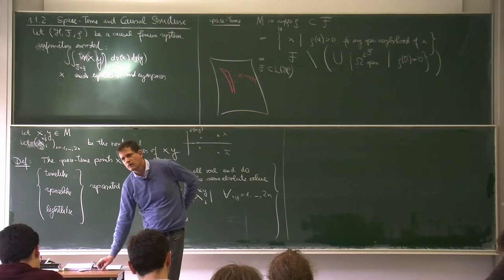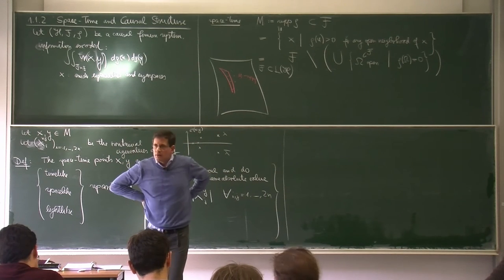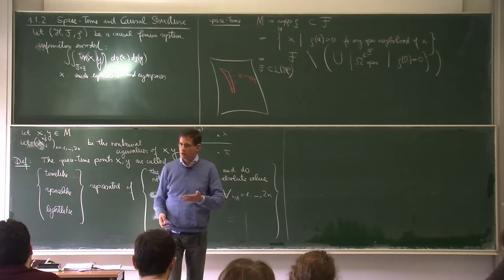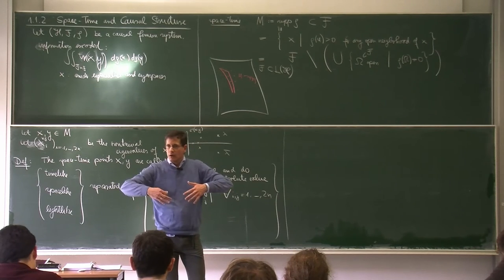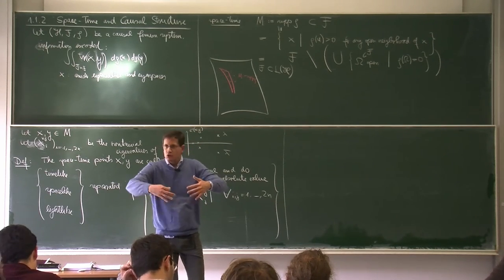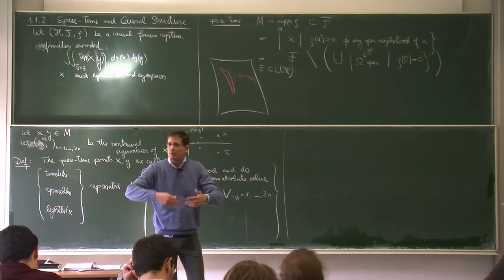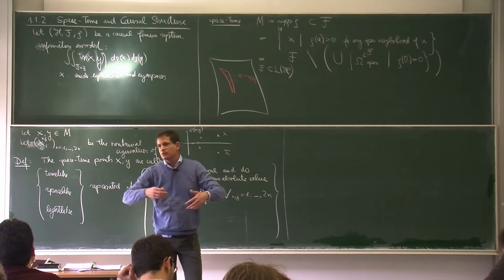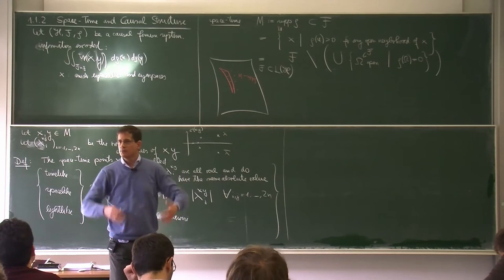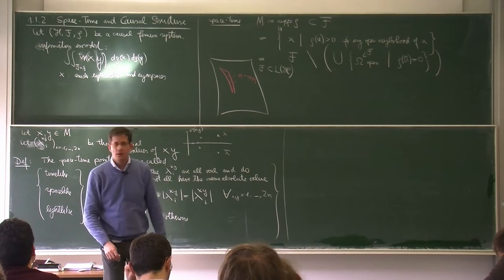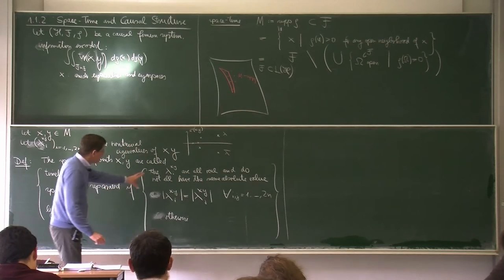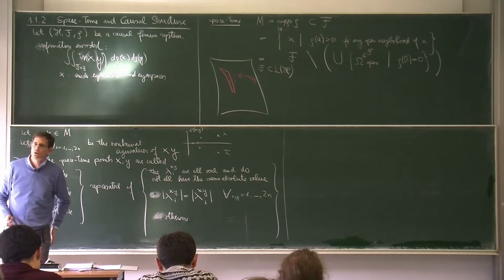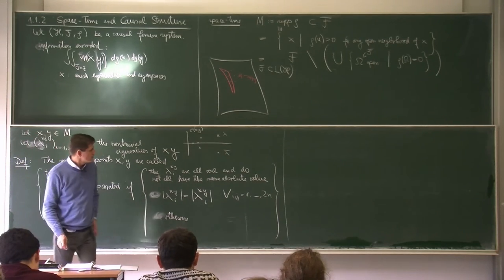If you vary the measure rho, the support also changes, so spacetime itself changes. This means you simultaneously change the metric, the fields, and everything. If we have a minimizer, this gives a causal structure of the resulting spacetime, from which we can construct wave functions and so on. This is the general picture.